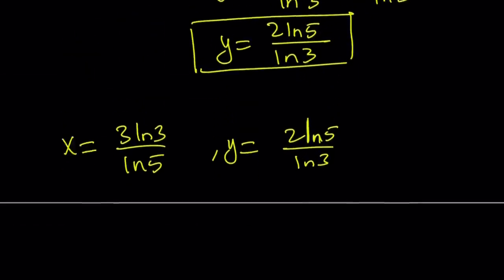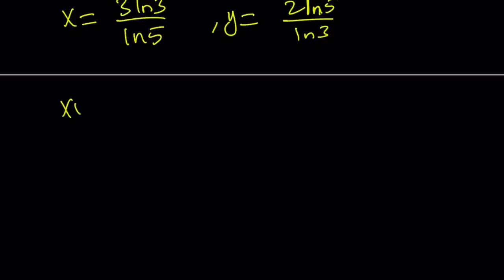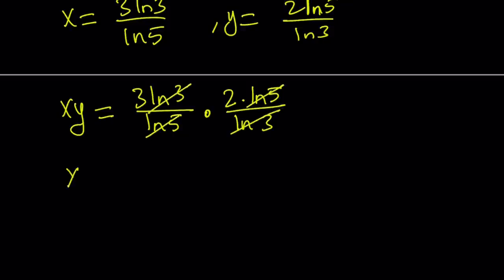So those are the values that I got and I'm supposed to evaluate x times y which is xy. So let's go ahead and multiply these expressions. 3 ln 3 over ln 5 times 2 ln 5. Maybe I'll split them up a little bit so they don't get mixed up. Divide by ln 3. Notice that ln 3 divided by ln 3 is equal to 1. So these two cancel out. ln 5 cancels out. And what is 3 times 2? 6, right? So the answer is 6. Great.